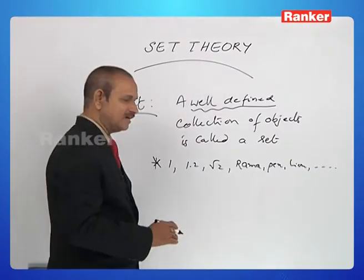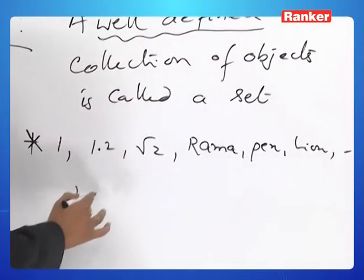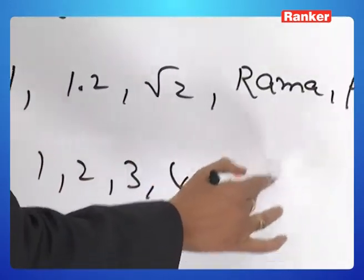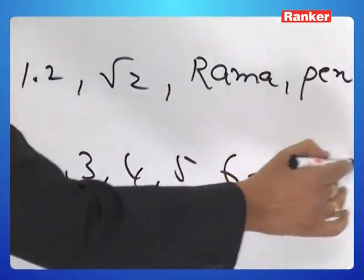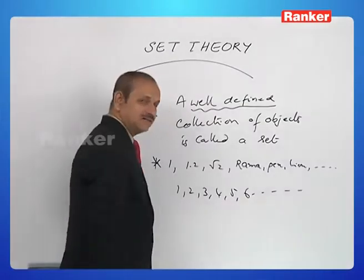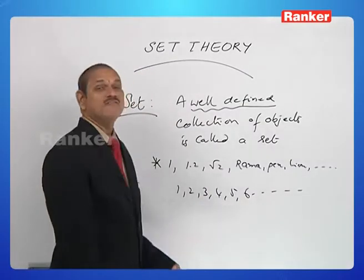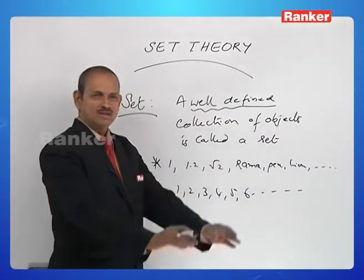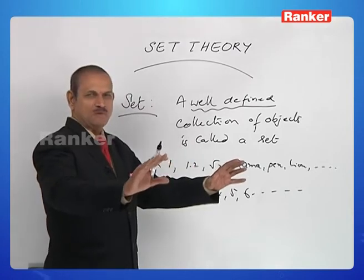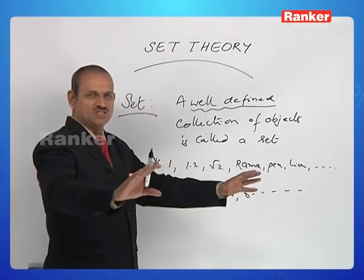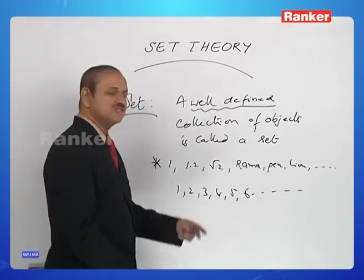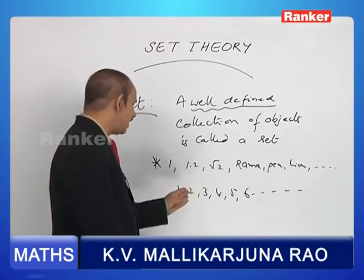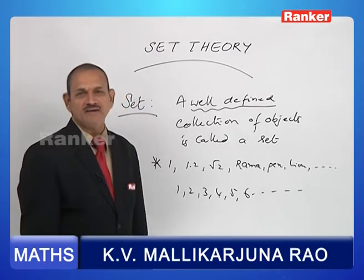Whereas, consider this collection: 1, 2, 3, 4, 5, 6, and so on. This is a collection of natural numbers. Such a clear-cut, perfect, fixed understanding can be said about this collection. That is why it is well-defined.